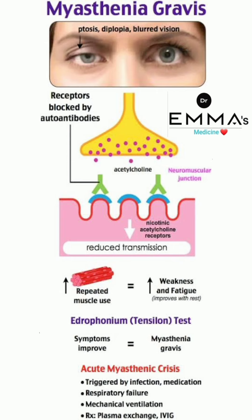In acute myasthenic crisis, it is triggered by infection or medication, leading to respiratory failure requiring mechanical ventilation. Treatment of the crisis is plasma exchange and intravenous immunoglobulin. This is all about myasthenia gravis.